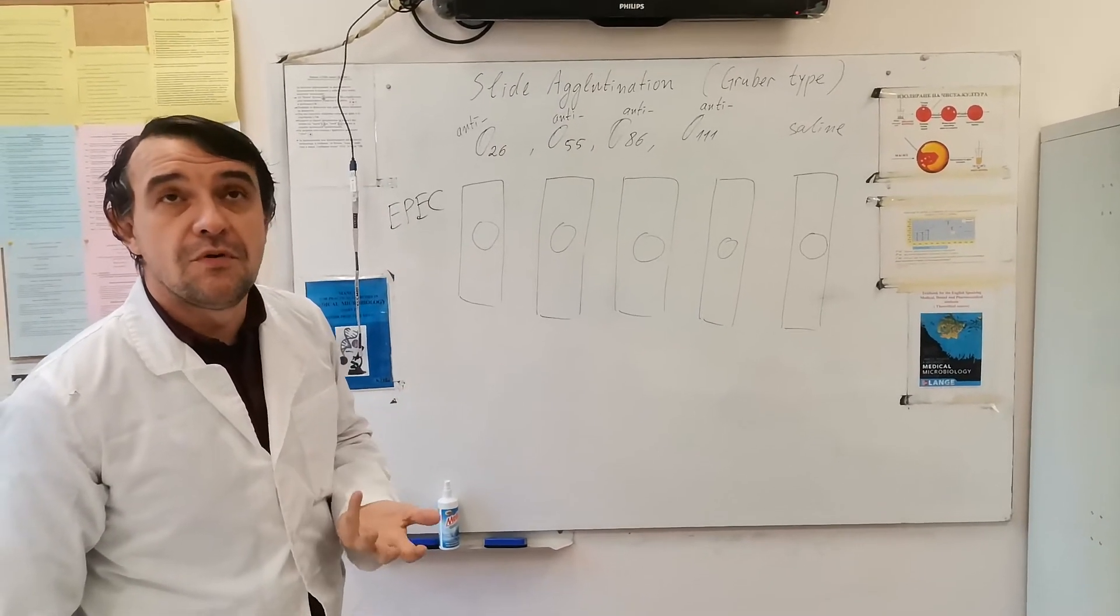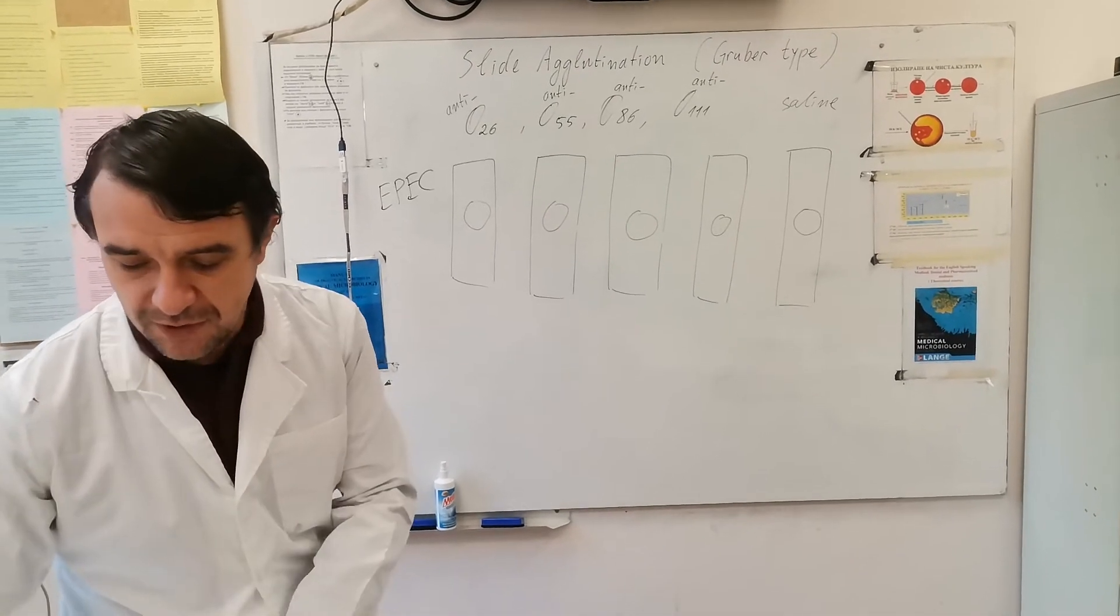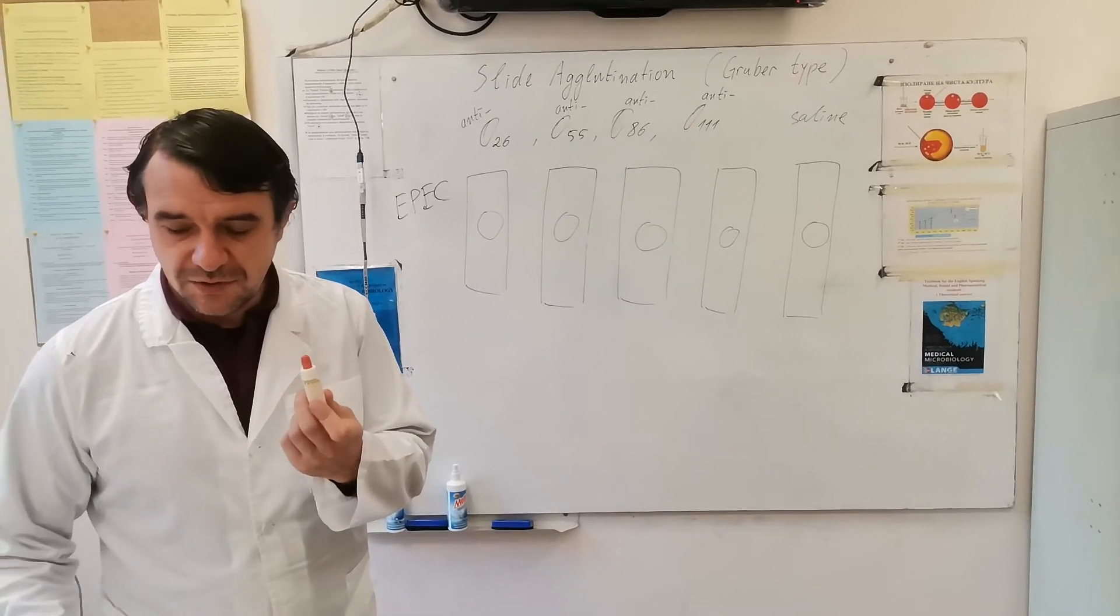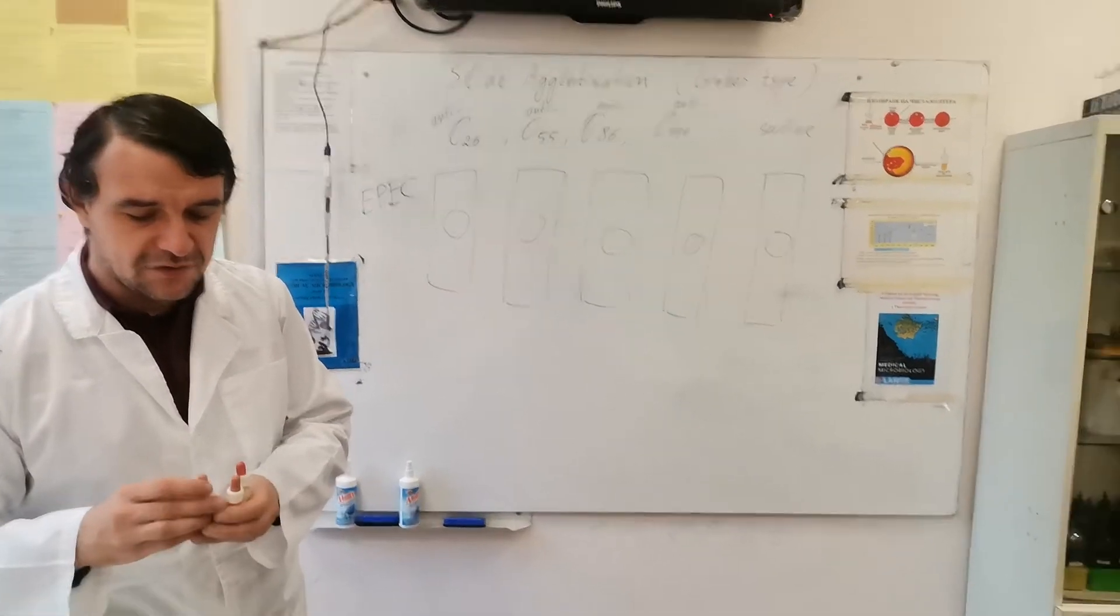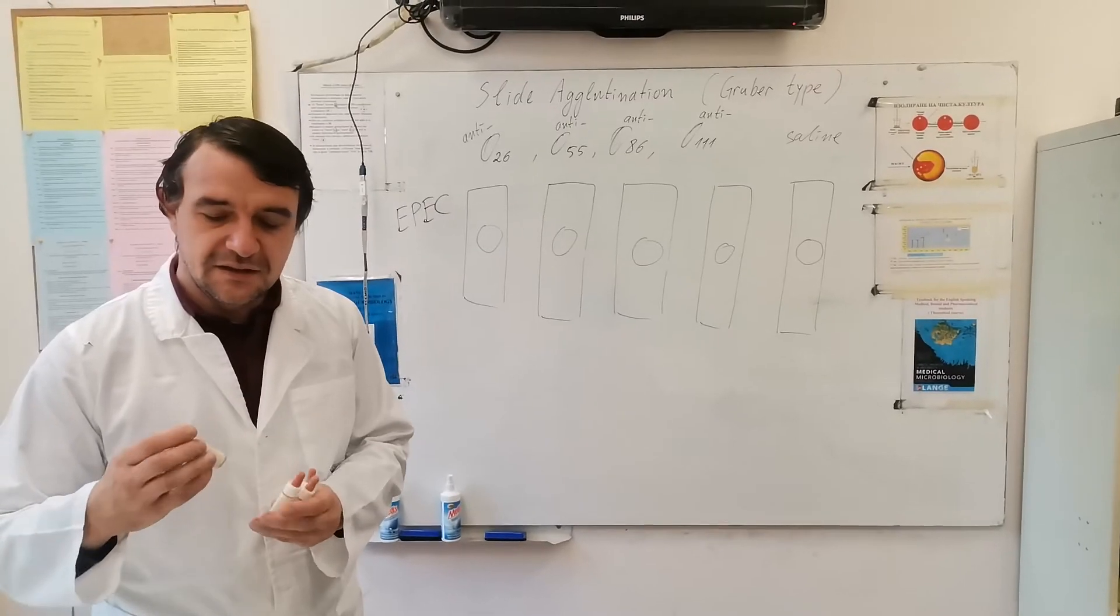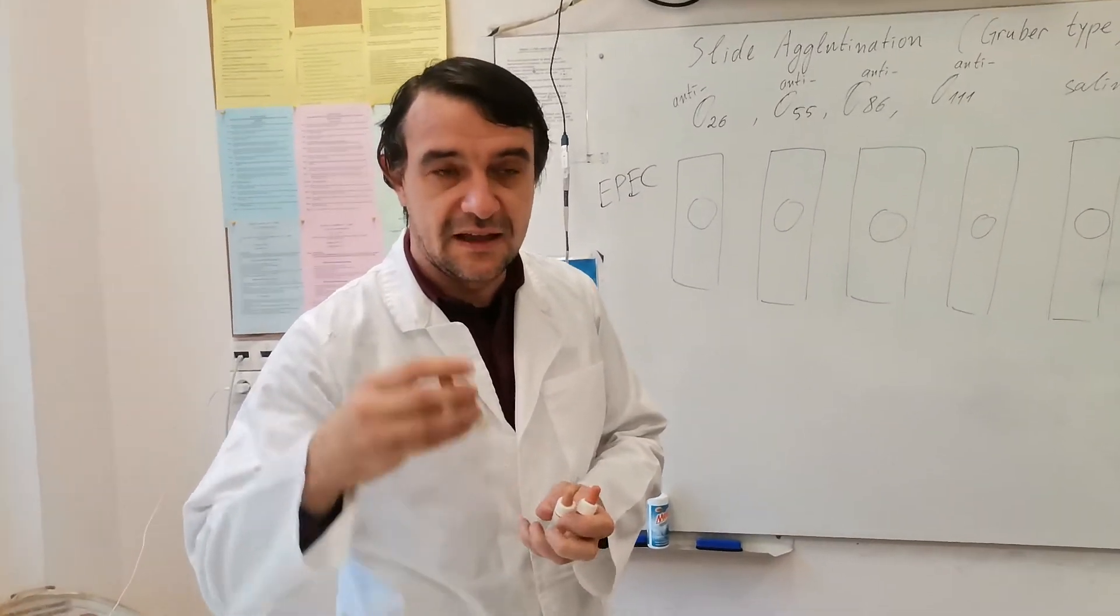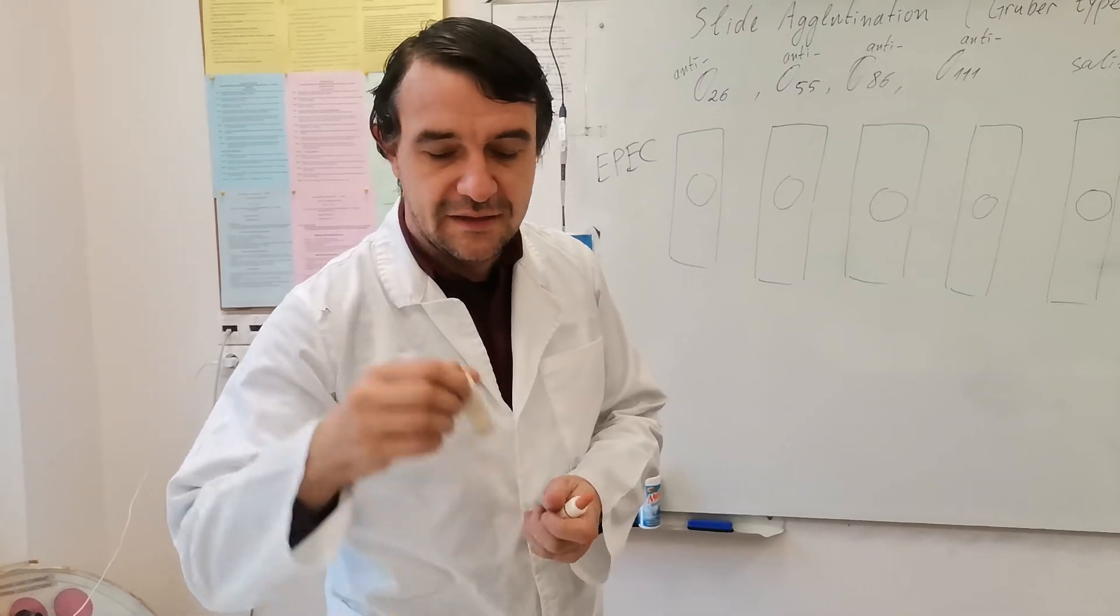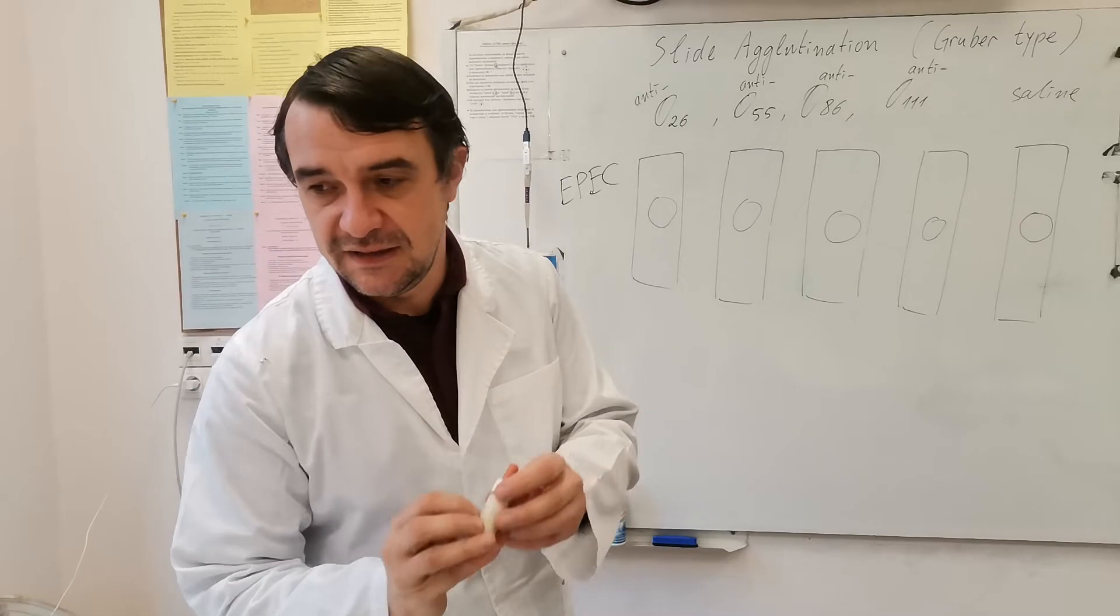In order to prove the presence of an antigen, we need to use specific antibodies. In these small vials, there are antibodies against those enteropathogenic serotypes. These are anti-O26 antibodies, anti-O55, anti-O86, and anti-O111.